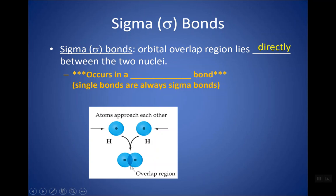A sigma bond is when the orbitals containing the bonding electrons lie directly between the two nuclei. This always happens in a single bond — a single bond is always a sigma bond. Single is sigma, S-S, super easy. So if H bonds with H and forms a single bond, that's a sigma bond. It could be two Cl's bonding together — single bond, sigma bond.